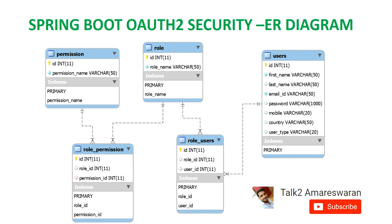ID is the primary key value. Then we have to create the role table. The role table has ID and role name attributes, with ID as the primary column. Then we have to assign permissions to roles, so I created the role_permission table.